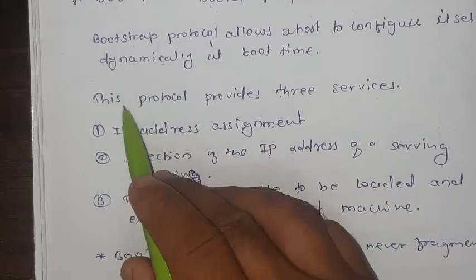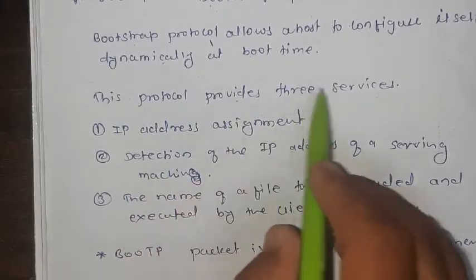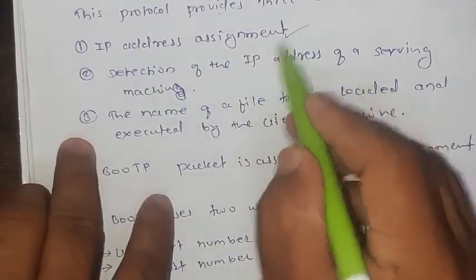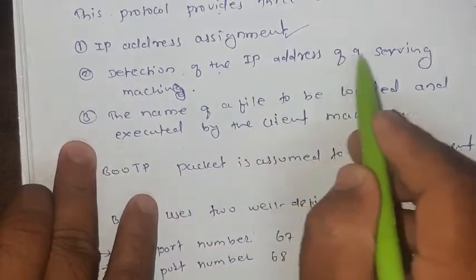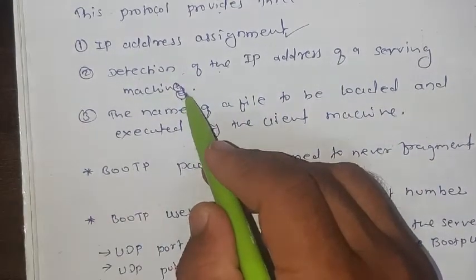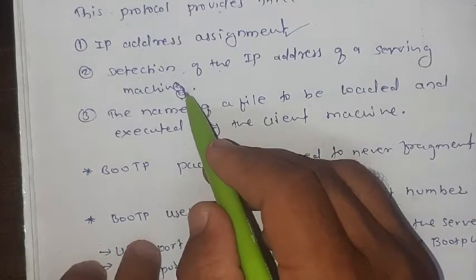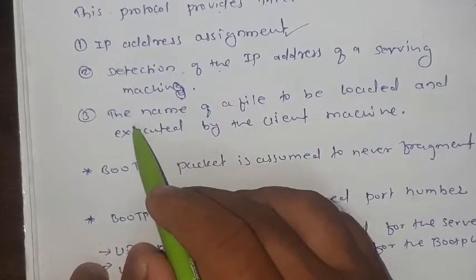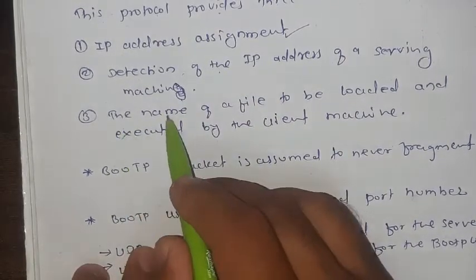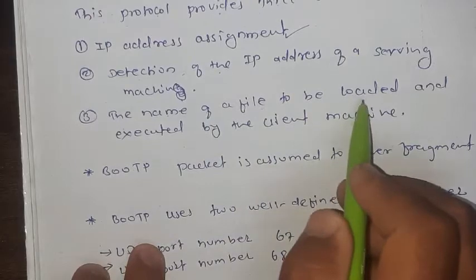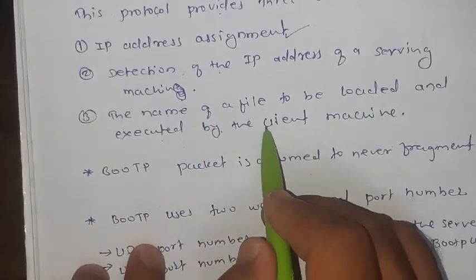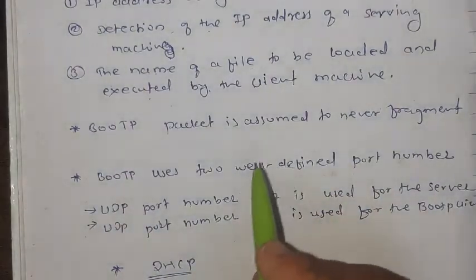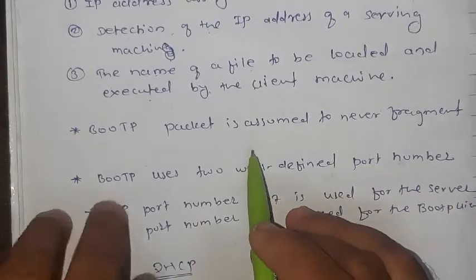This protocol provides three services. First: IP address assignment. Second: detection of the IP address of a serving machine — if you want to detect the IP address of any machine, it will easily detect with the help of BOOTP protocol. Third: the name of a file to be loaded and executed by the client machine — you can also trace the loaded file of the client machine with the help of BOOTP protocol.